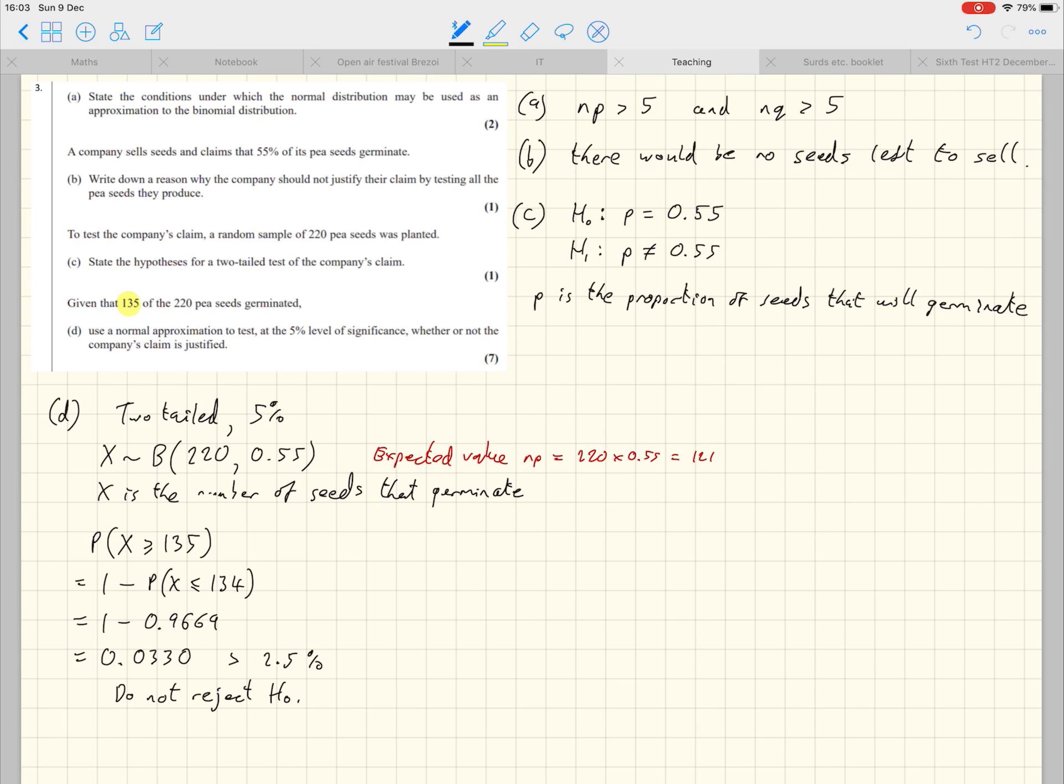So the conclusion, therefore, would be that the company's claim is justified. Remember, normally the claim is the H1, but in this case the claim is the company's claim, which is H0. So company's claim is justified. In the exam, I'd be a little bit more careful there, probably, and write the company's claim that the proportion of seeds that germinate is 55% is justified. So be very specific there.